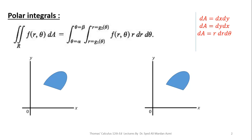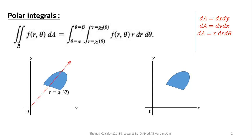We will calculate the limits of theta as radian linear angles in the counterclockwise direction with the positive x-axis. In order to calculate limits of R, we will pass an arrow through our region. The boundary through which this arrow enters our region will give you the lower limit, and the boundary through which this arrow exits will give you the upper limit of R.